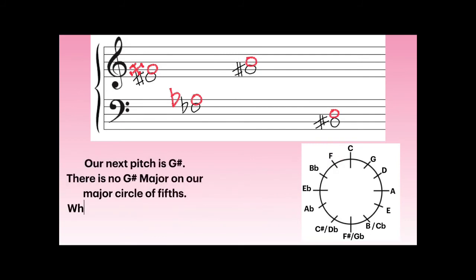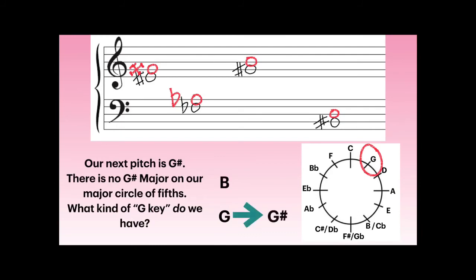Our next pitch is G-sharp. There is no G-sharp major on our major circle of fifths, but we have G major — which has one sharp, F-sharp. So the B above G would be a B-natural. We need to find a major third above G-sharp: raise our G to a G-sharp and also raise our B to a B-sharp. G to B is a major third; G-sharp to B-sharp is also a major third. The correct answer is B-sharp.